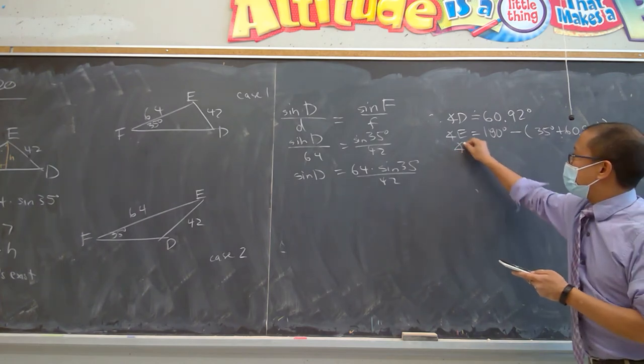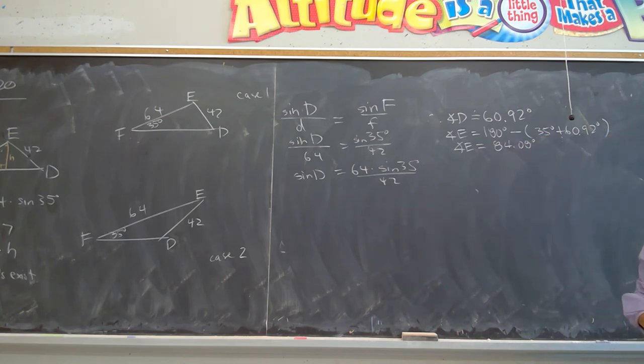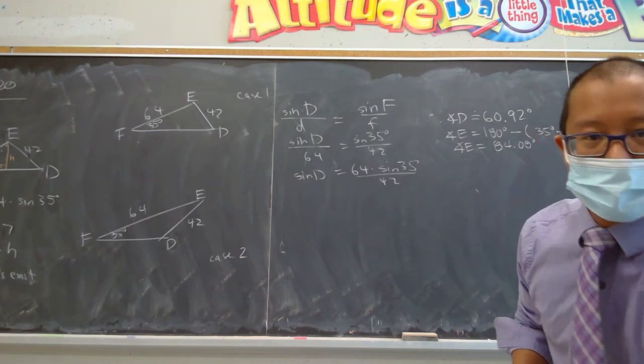And so angle E is 84.08 degrees. So we have three angles and now two sides. The last side we have to solve.